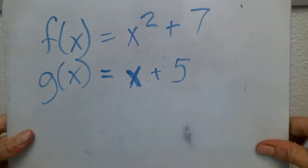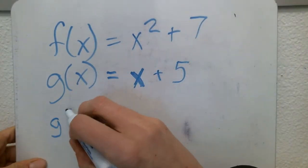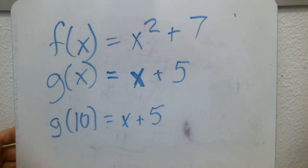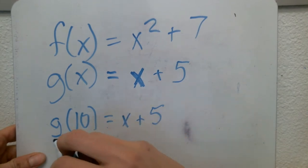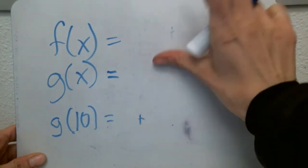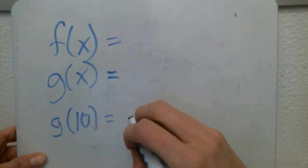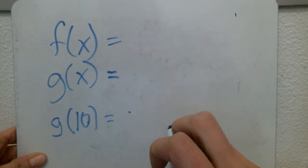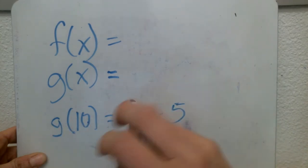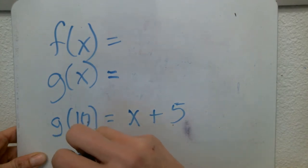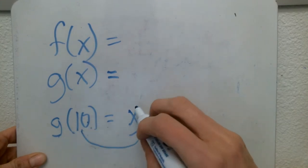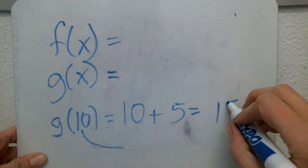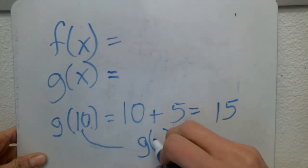I could also evaluate g of x. I'm going to say g of 10, where g of x equals x plus 5. So g of 10 means I take 10 and substitute it in for x rather than another number. So g of 10 means I put 10 in for x: 10 plus 5 gives me 15. So g of 10 equals 15.